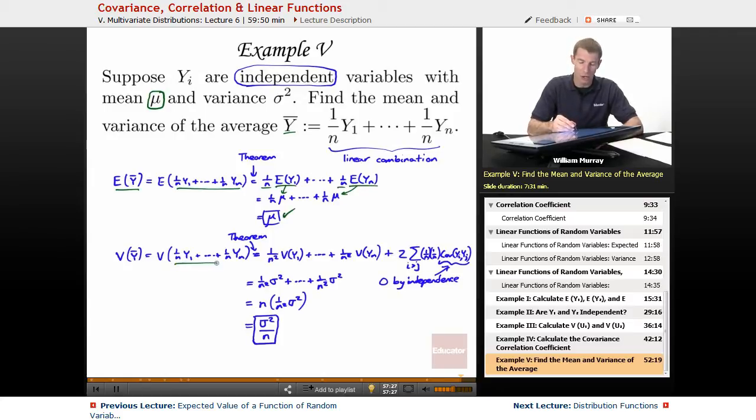The variance is a little bit messier. The variance of a linear combination. Again, you can split it up into all the separate variances. But when you pull out the coefficients, they get squared. So that's why we get 1 over n squared on each of these coefficients. And then there's this cross term, 2 times the sum of the coefficients. Those are a little messy there, but that says 1 over n times 1 over n. And that's coming from these coefficients right here.